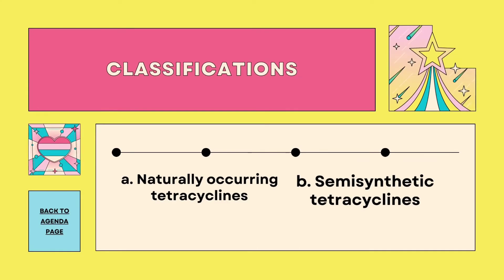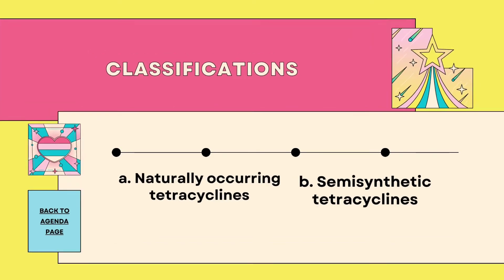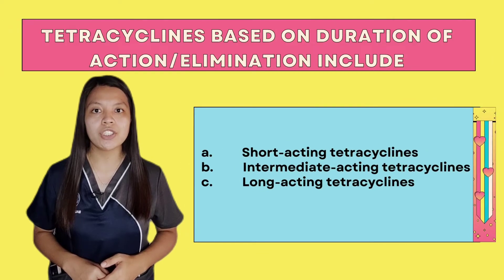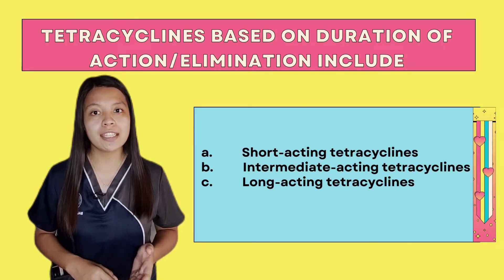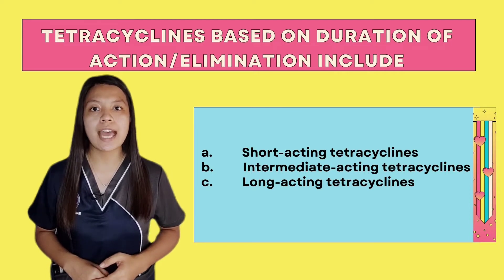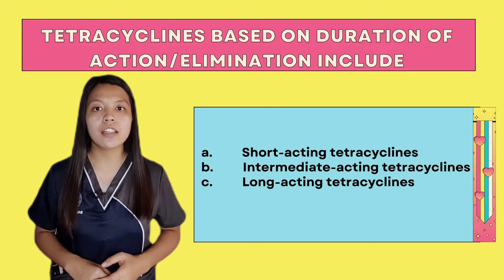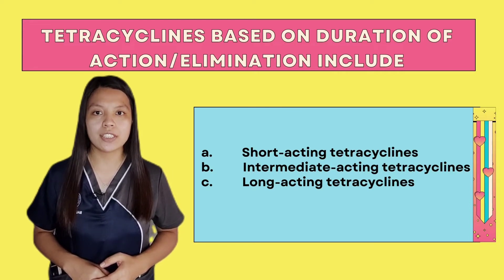Tetracyclines are classified based on their sources and the duration of action and elimination. Two types of tetracycline sources are the naturally occurring tetracyclines and the semi-synthetic tetracyclines. The tetracyclines based on duration of action and elimination include short-acting tetracyclines, intermediate-acting tetracyclines, and the long-acting tetracyclines.